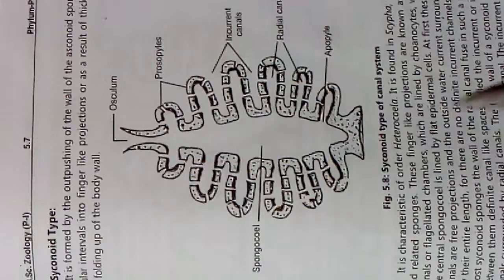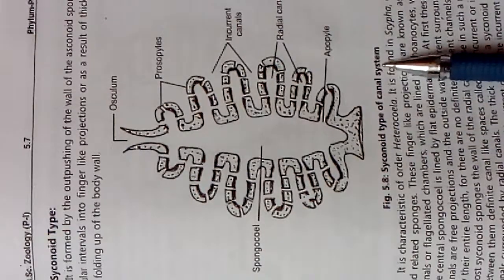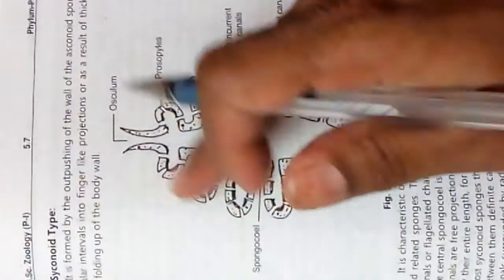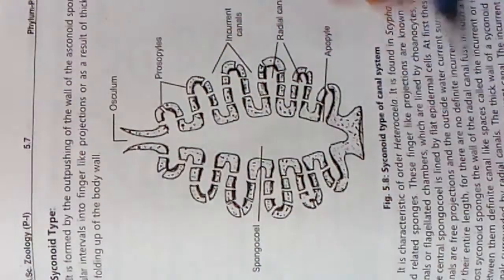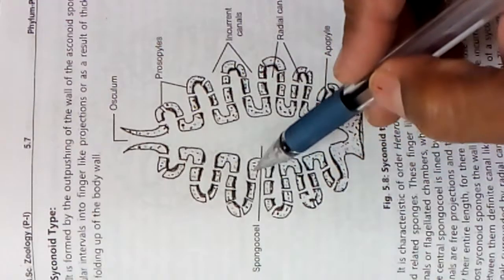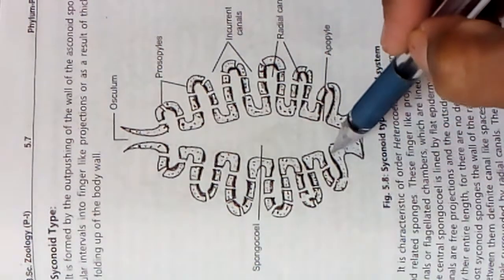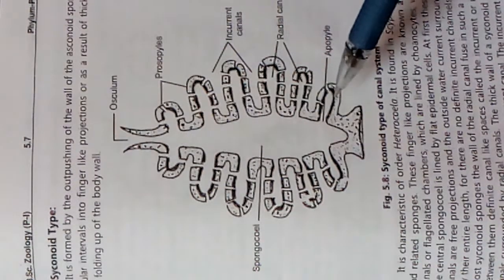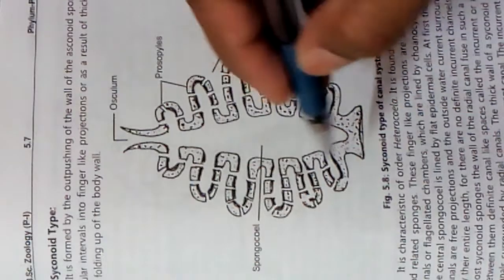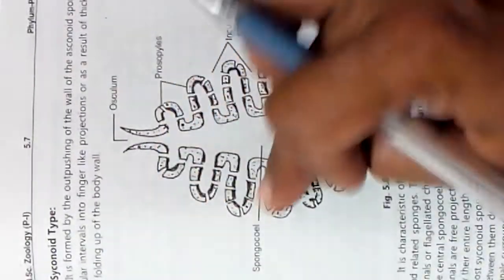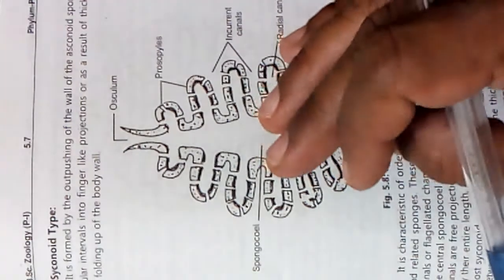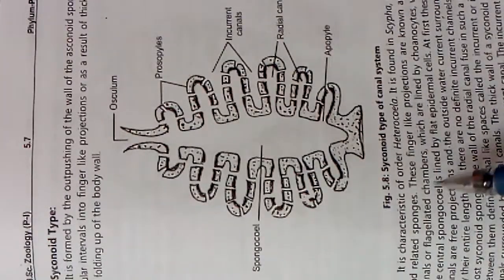The second type is the syconoid type of canal system. In the asconoid type, the epidermis forms a simple vase-like structure with a plane wall. In the syconoid type, that plane wall shows outward pushing at regular intervals, responsible for formation of finger-like structures. This modification involves folding of the body wall, and this type of system is characteristic of the order Heterocoela.